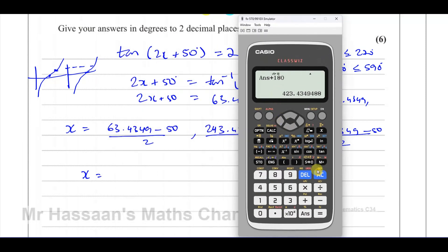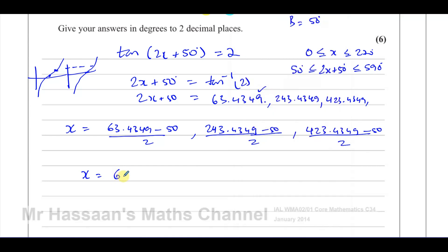So that gives us our answers. So let's just go back to this. I'm going to put answer minus 50 divided by 2. That gives us 6.71747. And then we have x equals.